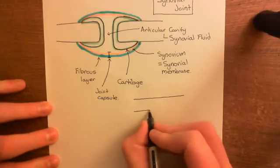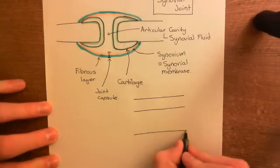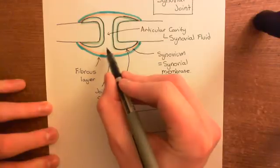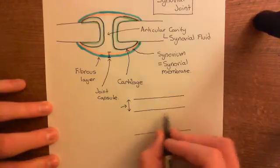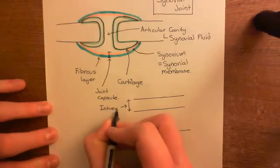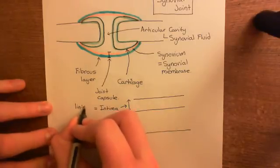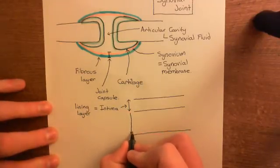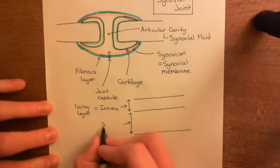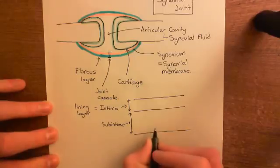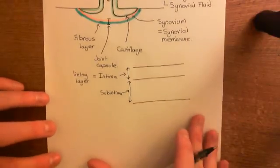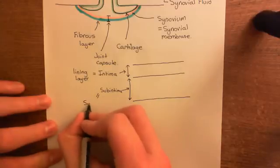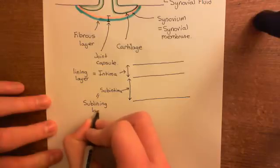The synovium can be divided into two major layers. First, you have the intima of the synovial membrane — also called the lining layer — which is the layer that faces into the articular cavity. Then you have the larger layer underneath called the sub-intima, which is below the intima and does not face directly onto the articular cavity. The sub-intima supports the intima, and is also known as the sub-lining layer.